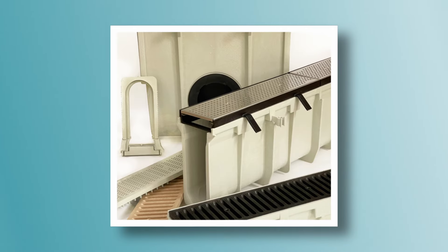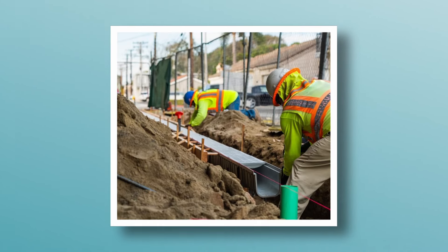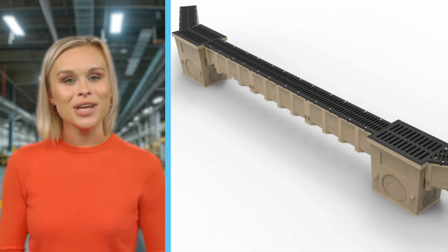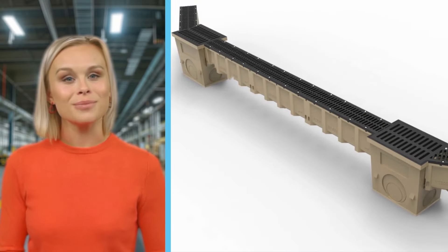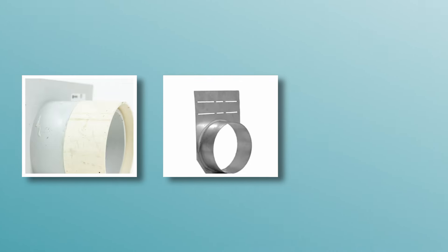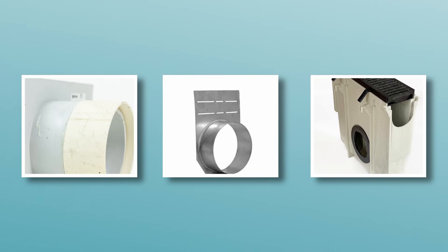Today at SwiftDrain, we're diving deep into the world of trench drains, exploring everything from material composition and grate options to slot styles and installation. Trench drains are linear drainage applications used to collect and convey water and other liquids. SwiftDrain trench drains are made up of a U-shaped channel, grate covers, a closed end cap, an end outlet, and occasionally a catch basin.